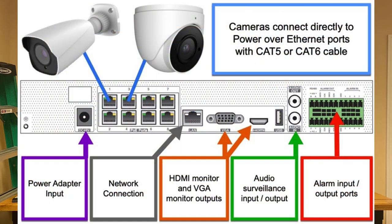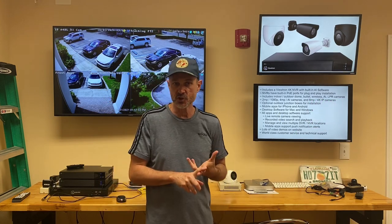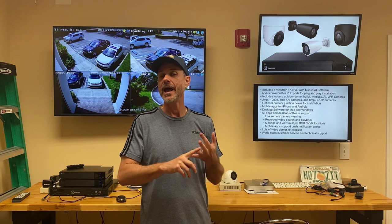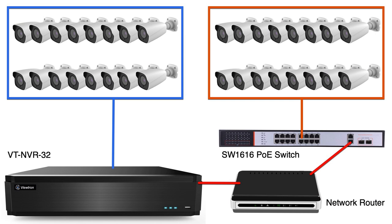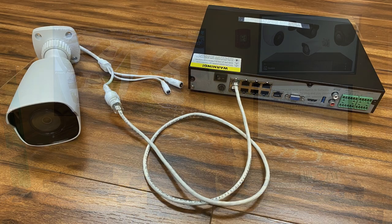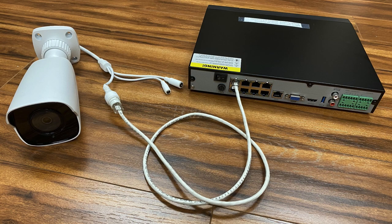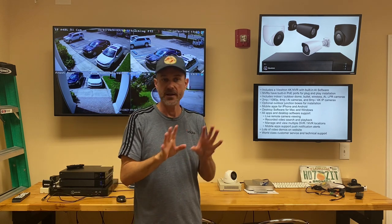All of these Viewtron NVRs have built-in PoE ports. The eight channel NVR has all eight Ethernet ports on the back as PoE. The 16 channel has 16 port PoE, and the 32 channel also has 16 port PoE. If you go beyond 16 cameras on the 32 channel NVR, you do need an external PoE switch. These PoE ports make these systems plug and play — you run your Cat5 or Cat6 network cable from the IP camera to the back of the recorder, plug it in, the NVR detects it, and it comes up. It's that simple.